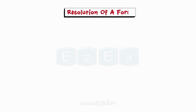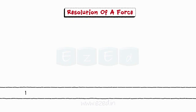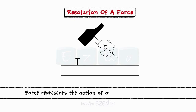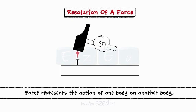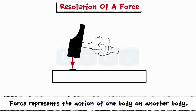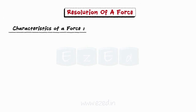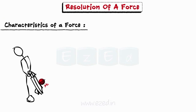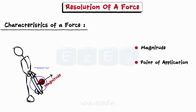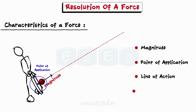We have previously learnt that a force represents the action of one body on another body and is exerted only when there is an actual contact between the two bodies. Any force is completely defined only when its magnitude, point of application, line of action, and direction are specified.